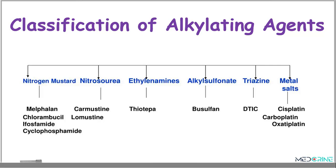Alkylating agents are classified into a number of classes: the nitrogen mustards, nitrosoureas, ethylene amines, alkyl sulfonates, triazines, and metasols. We shall try and look at the most important drugs in each of the classes.